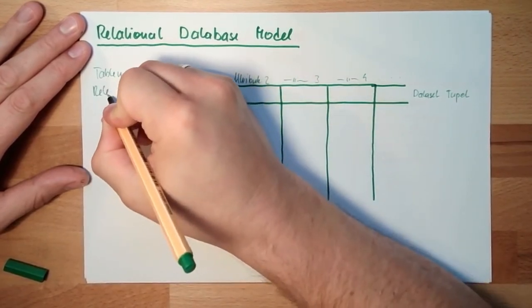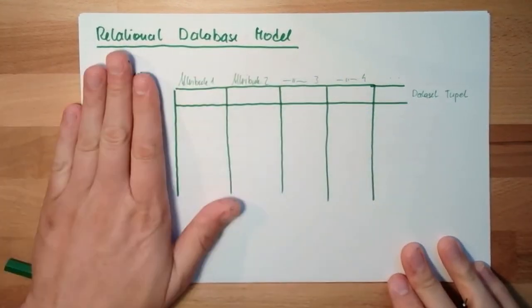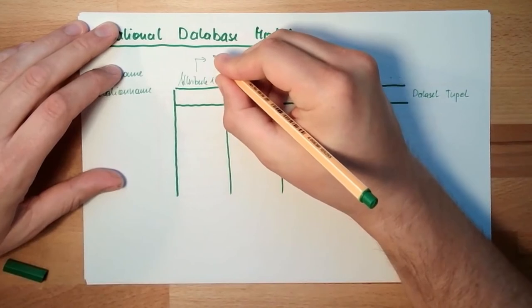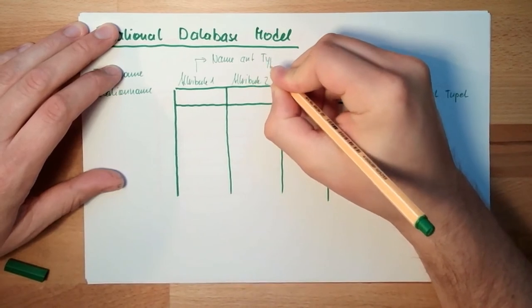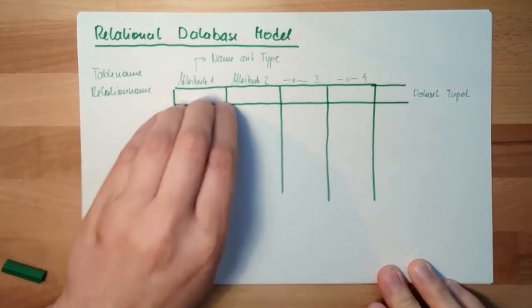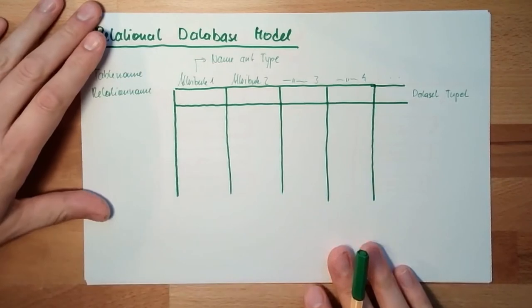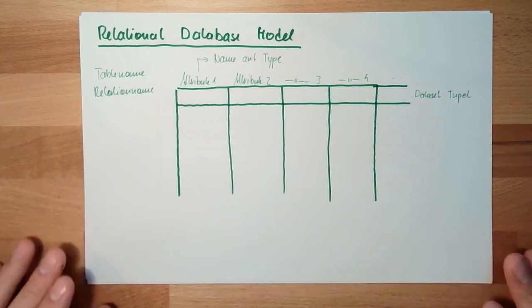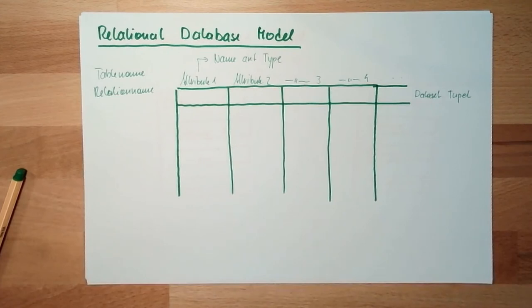So there is a table which has a name. Each table has different attributes. The attributes also have a name and type. So there is a name for this attribute and a type for this attribute. For instance, the name is given name and the type is characters, 20 characters. This is how such relational databases are stored.